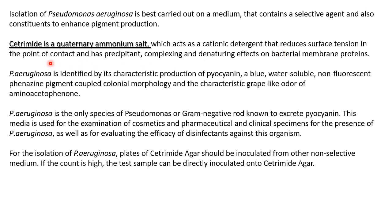Cetrimide reduces the surface tension at the point of contact and has precipitant, complexing, and denaturing effects on the bacterial membrane protein. As it comes in contact with the bacterial cell membrane, the proteins start precipitating, complexing, and the detergent has a denaturing effect on those proteins. That is how the other microbes are inhibited.